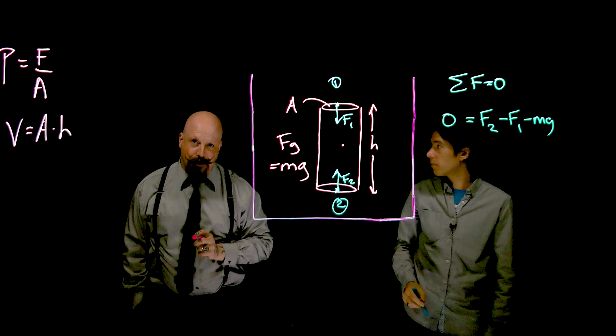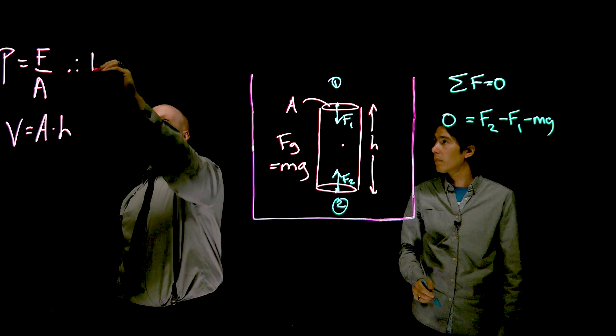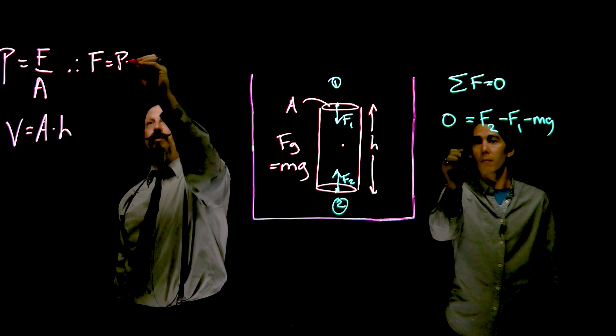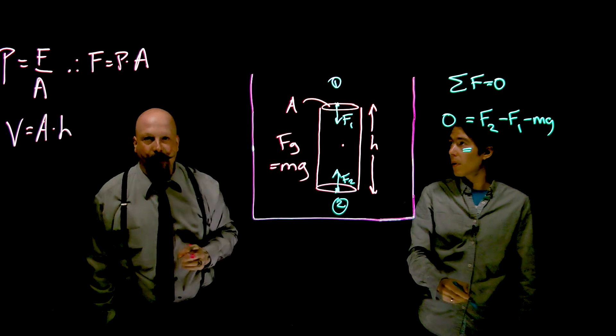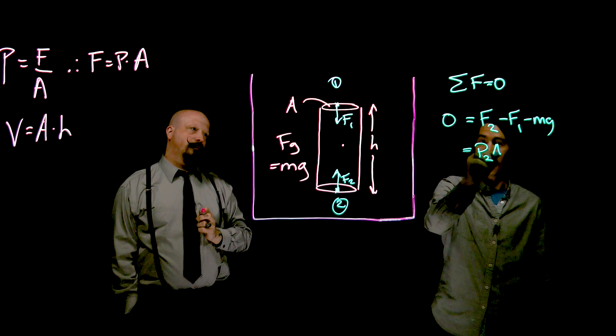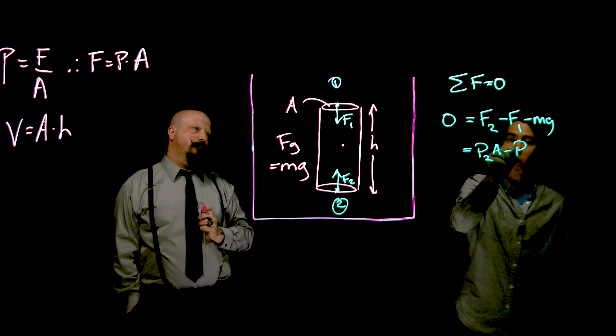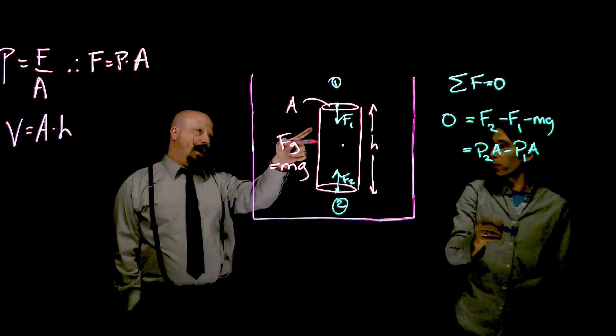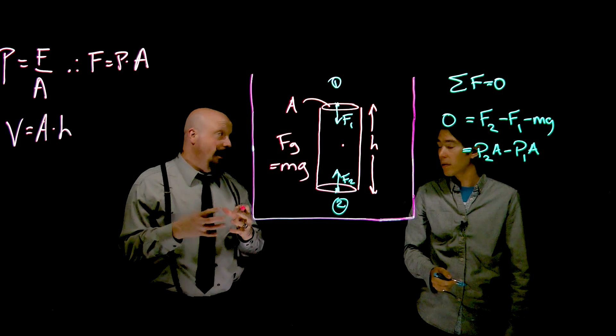Now, we've already defined the pressure as being the force per area. And so what that means is that we can also discuss the force as being equal to the pressure times the cross-sectional area. So then I'm going to write that force F2 as P2 times A, P1 times A for the force at the top. And that gives us an expression for that force of gravity, mg, to work on now.